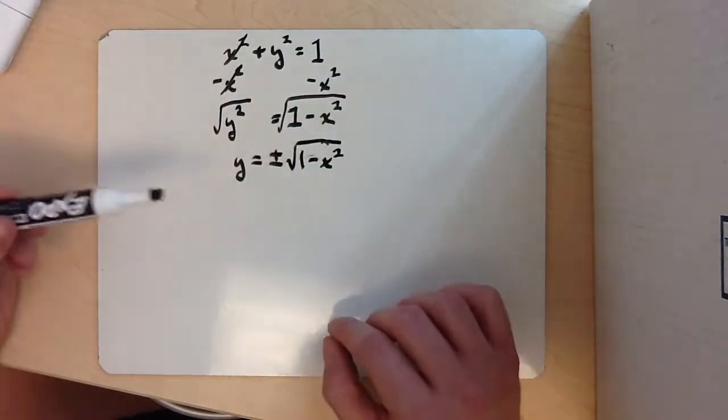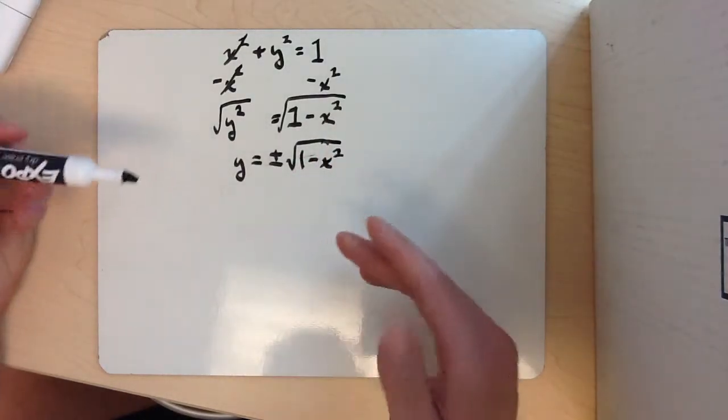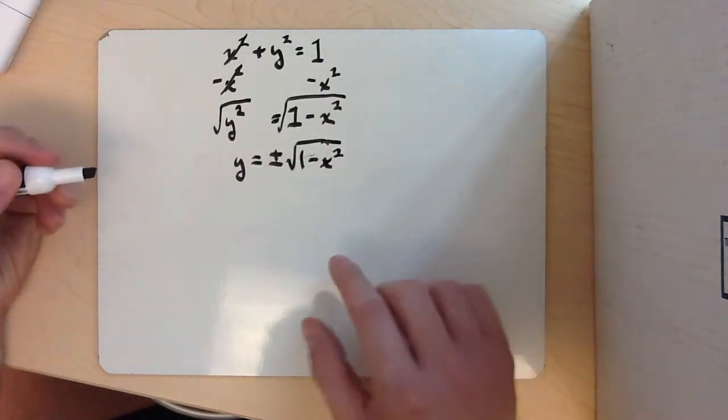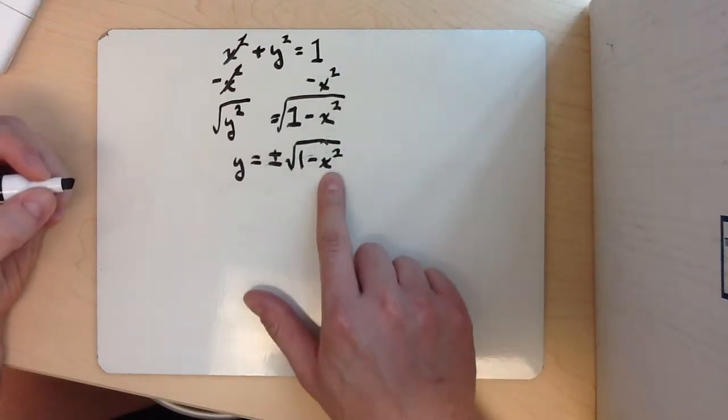From this, hopefully you remember that you can't take the square root of a negative number and still have a real number. You'd end up having a complex number. So that kind of limits what our domain can be for this x right here.